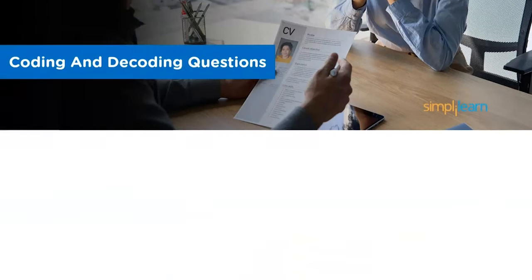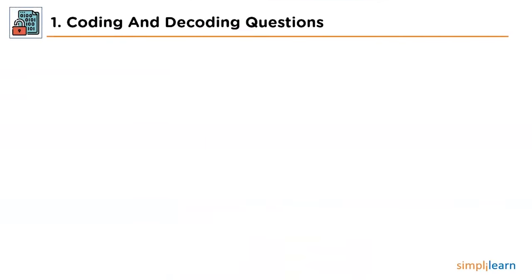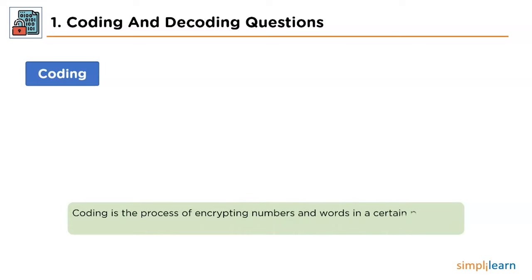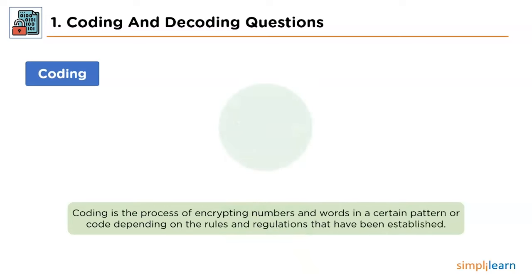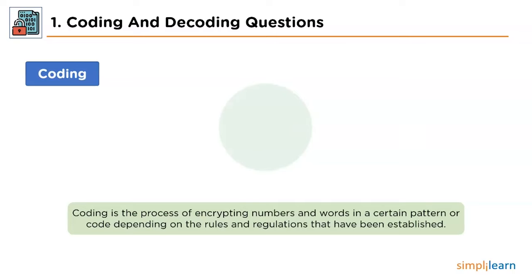Let's understand coding. Coding is a part of the logical reasoning section used to encrypt words and numbers in a specific pattern or codes using particular rules and regulations. In more technical terms, it is also referred to as encryption, and it is widely used across all messaging platforms to protect the content that users are communicating. The logic that these encryptions follow is known as a key, which can cipher the context in no time.